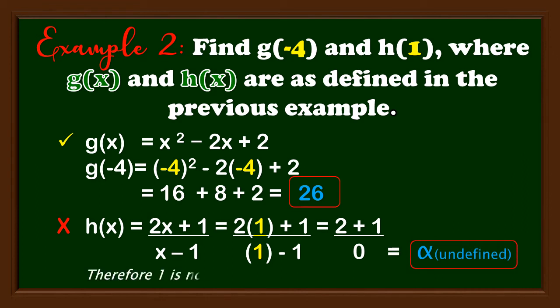Note that 1 is not a possible domain of the function h of x equals 2x plus 1 over x minus 1, because the resulting range is undefined.